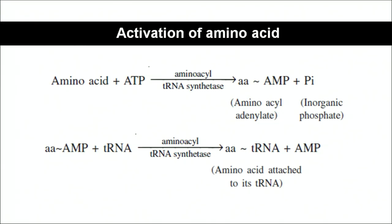In amino acid activation, the amino acid combines with an ATP molecule — ATP being the energy currency of the cell. In the presence of the enzyme aminoacyl-tRNA synthetase, an amino acid-AMP complex is formed and pyrophosphate is released. This amino acid-AMP then joins with tRNA, forming the amino acid attached to the transfer RNA, and adenosine monophosphate is ultimately released. This is known as the activation of amino acid.